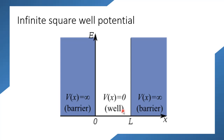This is a one-dimensional potential — it has only one dimension, in the x direction. The length of the potential is L, marked at zero and L. At zero and L, the potential becomes infinite, and between zero and L the potential is zero.